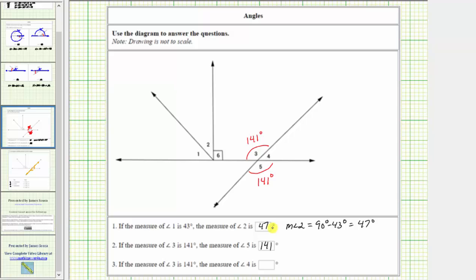For the last question, if the measure of angle 3 is 141 degrees, what is the measure of angle 4? Now we want to determine the measure of angle 4, this angle here, given the measure of angle 3 is again at 141 degrees.